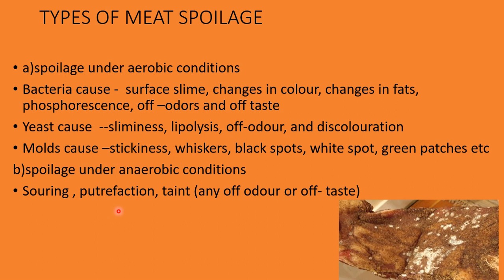Putrefaction is the anaerobic decomposition of protein with the production of foul-smelling compounds like hydrogen sulfide, mercaptans, indole and skatol, ammonia, amines, etc. So putrefaction is the anaerobic decomposition of proteins with the production of compounds such as H₂S, indole, ammonia, and amines. These are the spoilage conditions observed in meat during aerobic and anaerobic conditions.